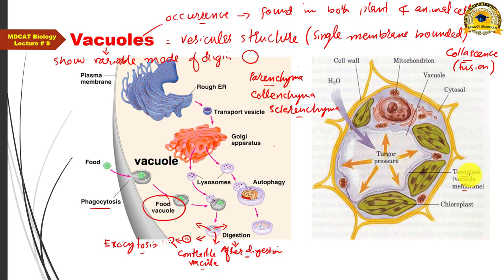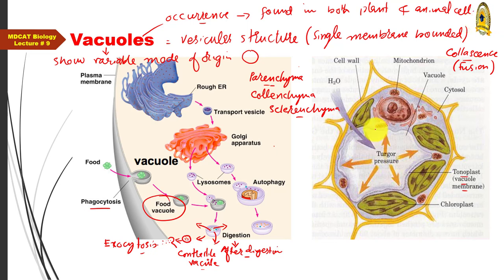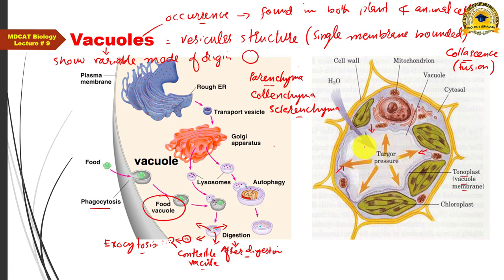The tonoplast contains many active transport channels and carrier proteins involved in the uptake of various materials from the cytoplasm. Since the cytoplasm acts as a storehouse, materials that need to be stored longer are taken up by the vacuole membrane, so those substances move from the cytoplasm into the vacuole. As various inorganic and organic solutes accumulate inside the vacuole, solute concentration increases.